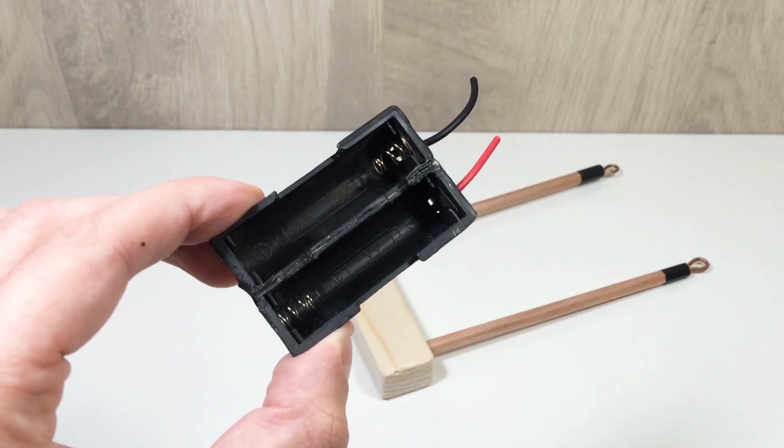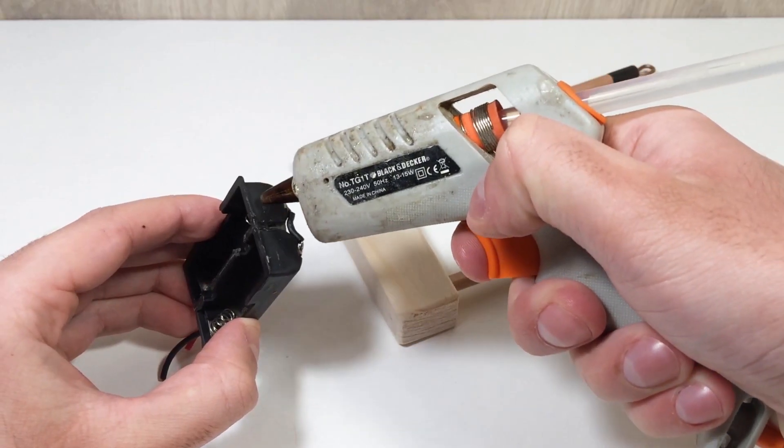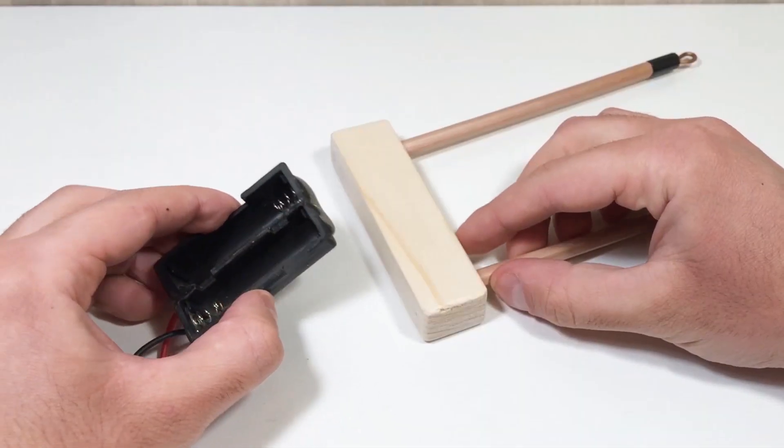Now you'll need a battery holder for two AA batteries or one rechargeable cell. Glue it to the wooden base using a glue gun or double-sided tape.